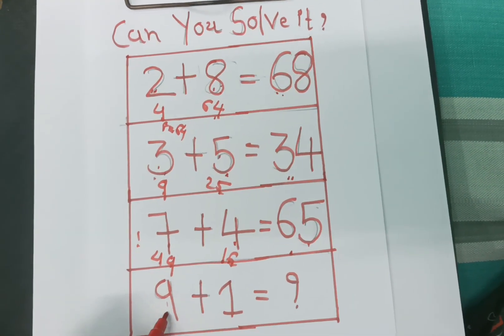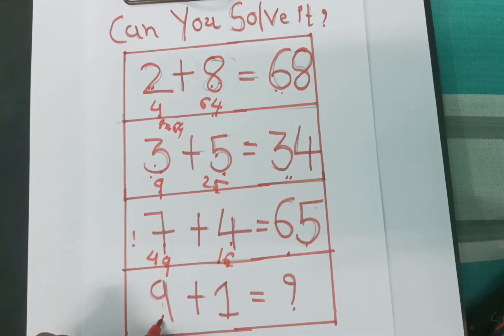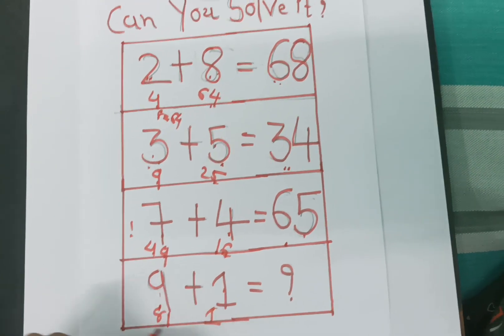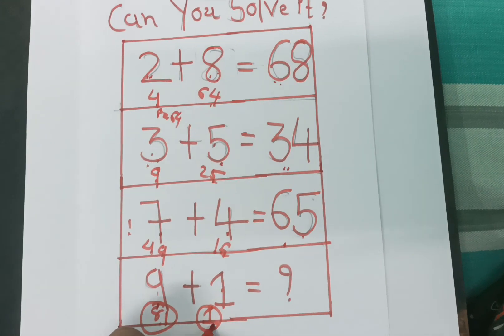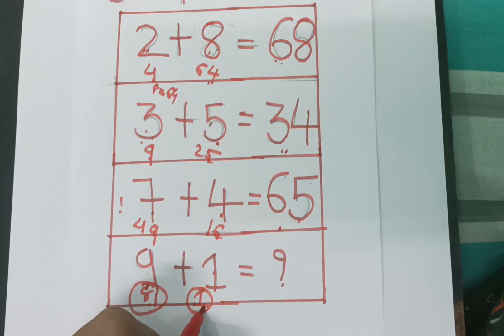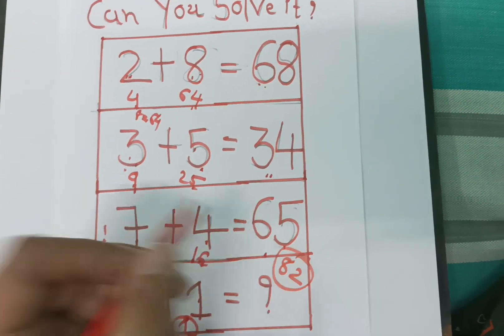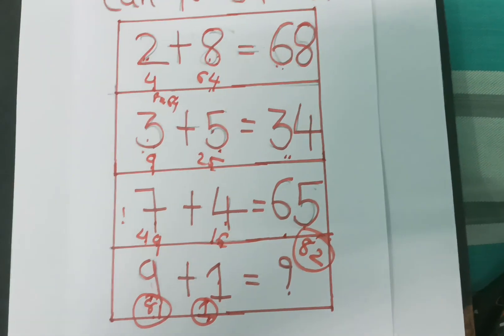9 square is 81, and 1 square is 1. 81 plus 1 is equal to 82, so the answer is 82. This is very very easy question.